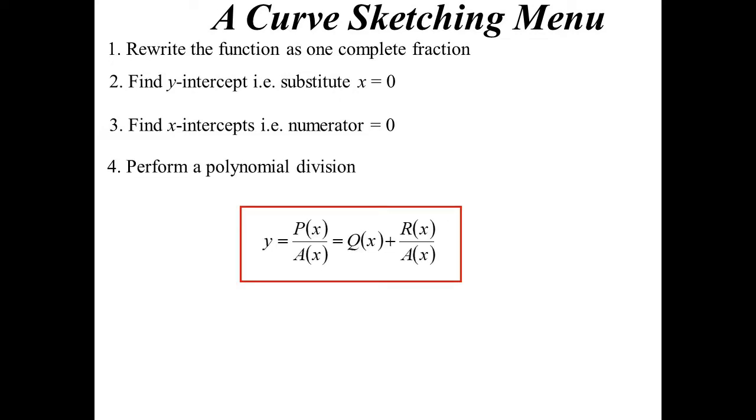We can then do a polynomial division, and when we do our polynomial division, we'll end up with the quotient plus the remainder over the divisor. And then when it's in that form, that gives us a lot of information as well.